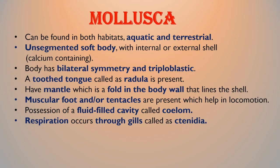The next group of invertebrates is mollusca. Mollusca can be found in both aquatic and terrestrial habitats. They have an unsegmented soft body with an internal or external shell. Their body has bilateral symmetry and is triploblastic. A toothed tongue called a radula is present in all these animals.